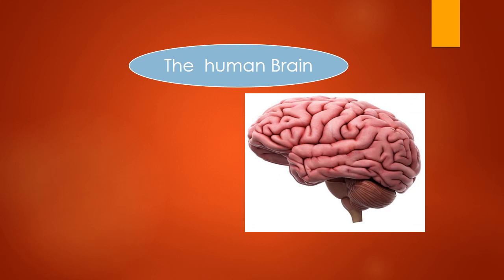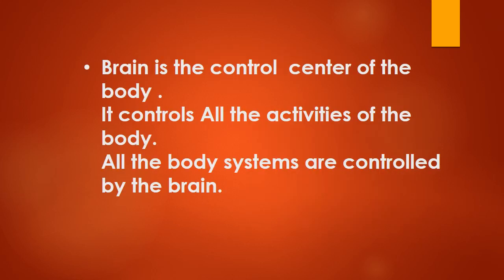Now, the human brain. The brain is the control center of the body — it is the boss of the body. It controls all the activities of the body. Although the brain forms its own system, it is also controlling all the other systems of the body, and all the functions of the body.